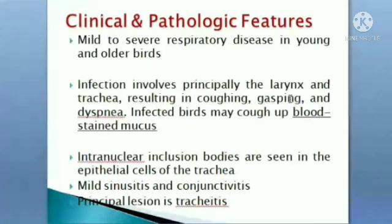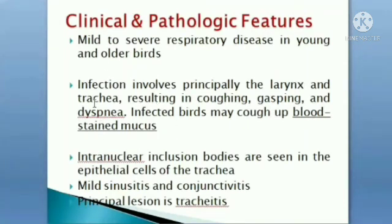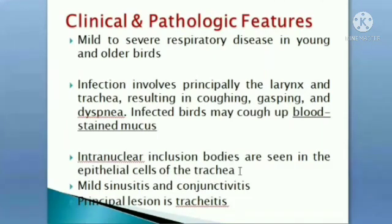ILT causes mild to severe respiratory disease in young and older birds. Infection involves principally the larynx and trachea, resulting in coughing, gasping, and dyspnea. Sometimes blood-stained mucus is present. Intranuclear inclusion bodies are seen in the epithelial cells of the trachea on histopathology.